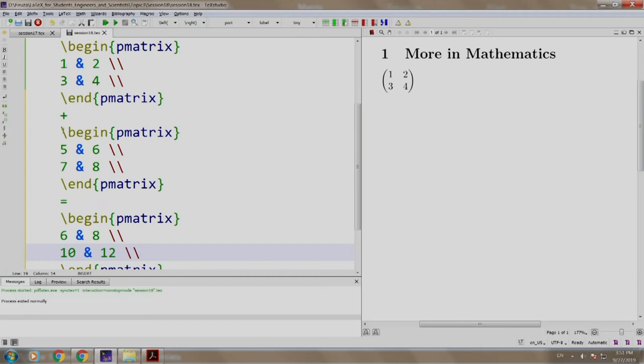and the answer is 6 and 8 slash slash 10 and 12. Addition of 1 and 5 which gives 6, 2 and 6 which gives 8, etcetera. Let us build and run. Look how beautifully it is aligned and spaced out. Also have a look at the size of the round brackets.